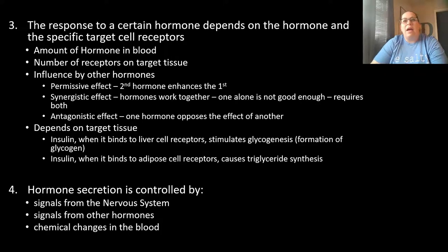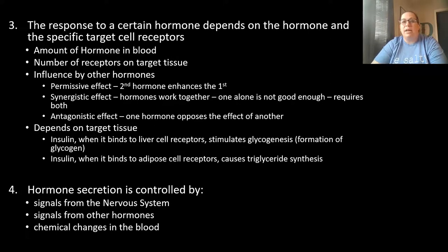Hormone secretion — how much hormone is secreted or present — is controlled by several factors: signals from the nervous system, signals from other hormones that adjust its activity, and chemical changes in the blood itself, which can affect certain hormones more than others.